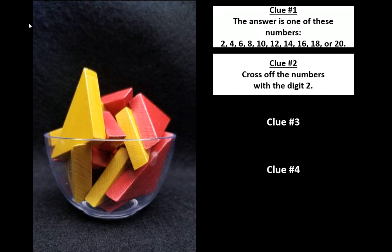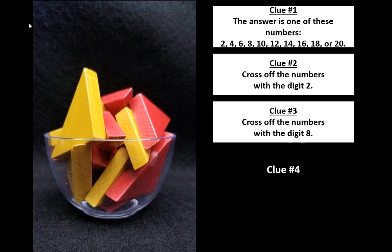Here's clue number three. Cross off the numbers with the digit 8. Again, if your estimate still works, you do not need to change it. But if you crossed off your guess, then you should make a new estimate now. Press pause and then press play when you're ready to continue.